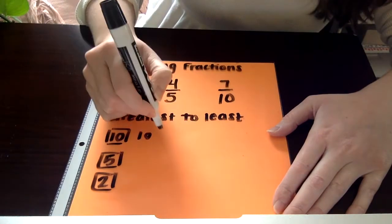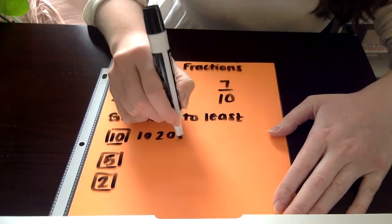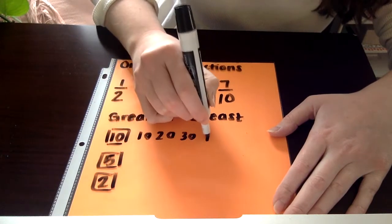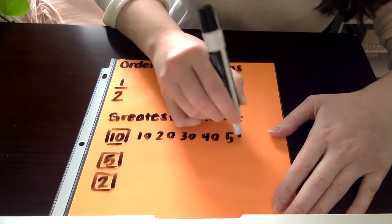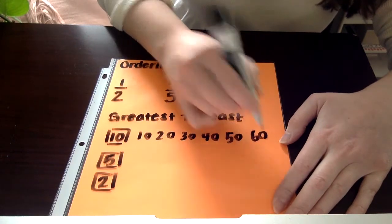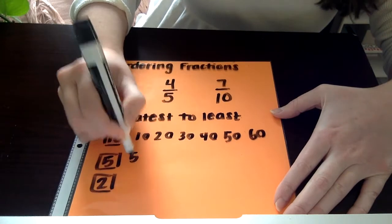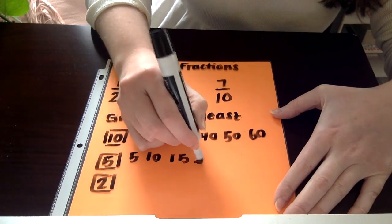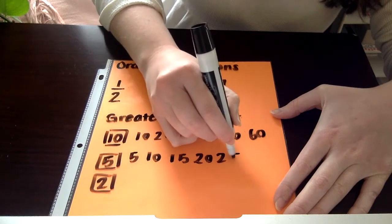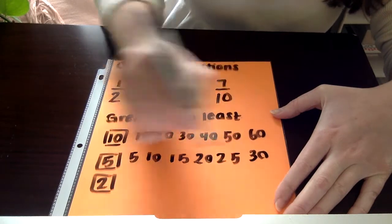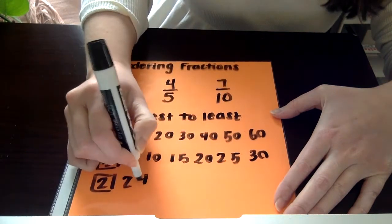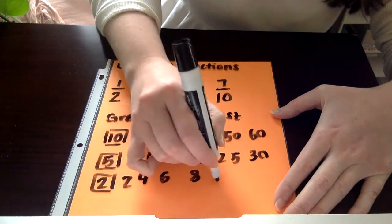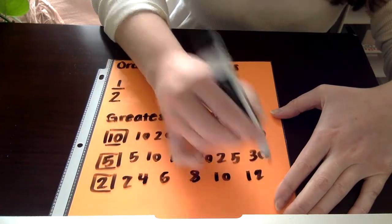So first 6 is 10, 20, 30, 40, 50, and 60. And then we have 5, 10, 15, 20, 25, and 30. And finally 2, 4, 6, 8, 10, and 12.